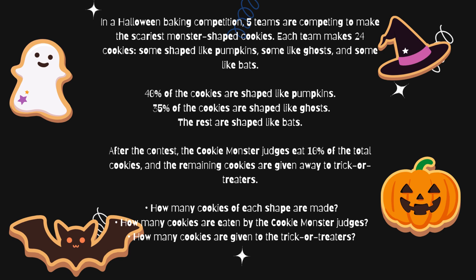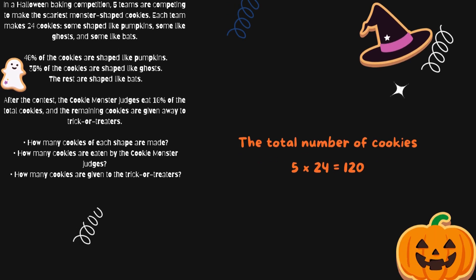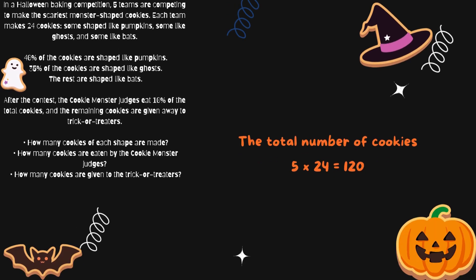This is hard. Let's solve this. Let's find the total number of cookies first. There are five teams and each team makes 24 cookies, so you multiply 5 by 24. This means there are 120 cookies in total.